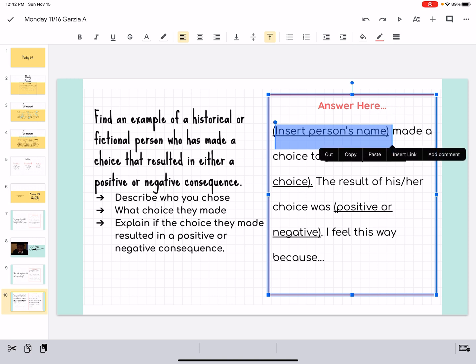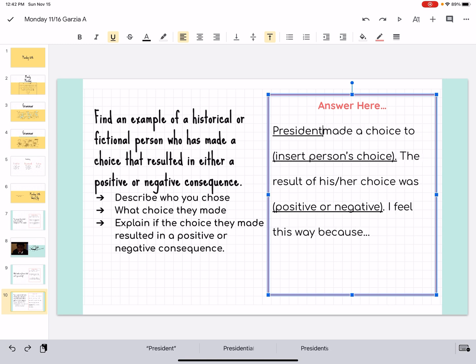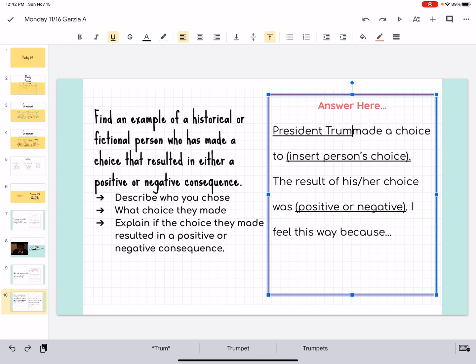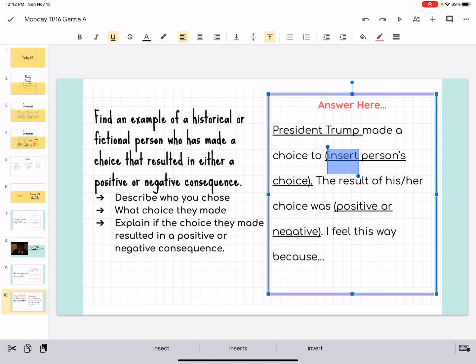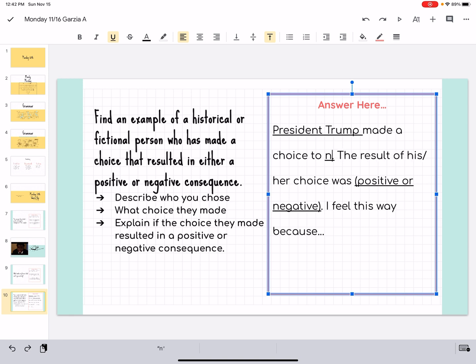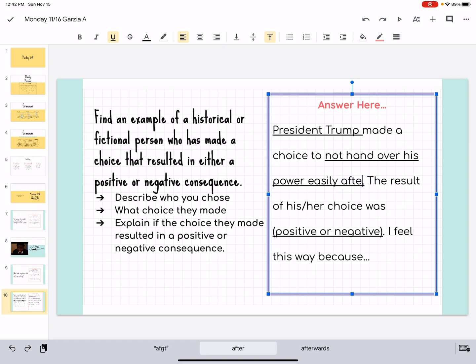Now, where it says insert person's name, delete that, and then put the person's name. So, President Trump made a choice to... I've had, why is this so tricky for me? I don't know. So, President Trump made a choice to not hand over his power easily, I guess, after losing the election.